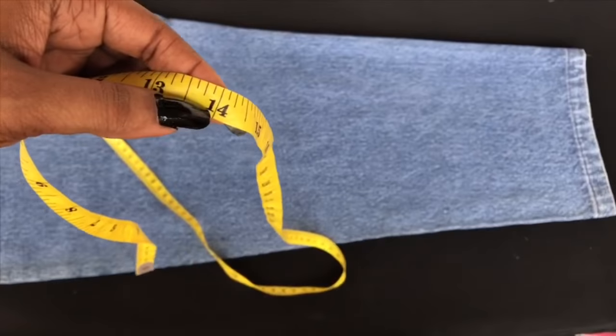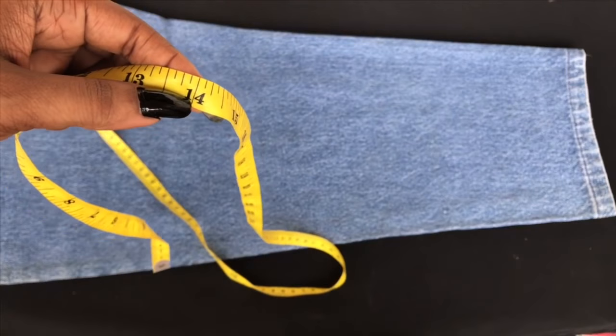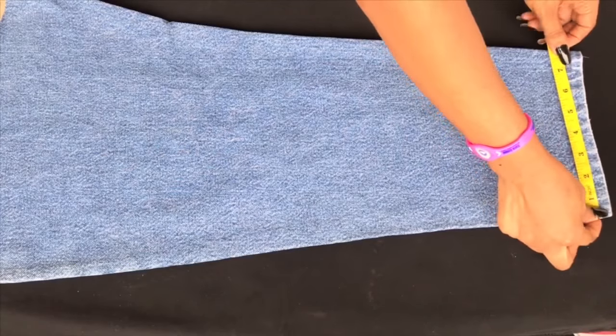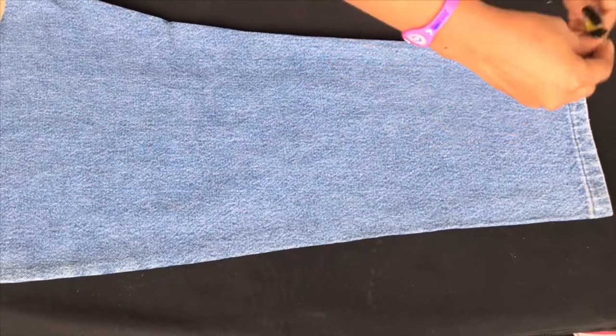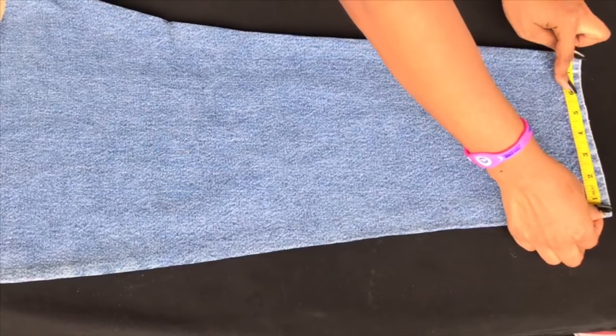So guys, you're going to want to take this measurement from the ankle of the jeans. My shoulder is 14 divided by two, that is seven. I'm just going to be marking my seven like so.